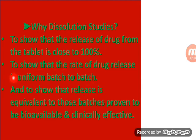The second reason is to show that the rate of drug release is uniform batch to batch. This is identified by the amount of drug released being consistent batch to batch, where the first batch drug release is the same as subsequent batches. For example, consider paracetamol with 3 batches.